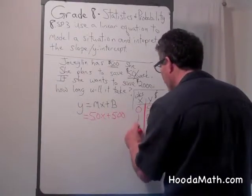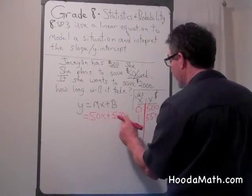If she worked for two weeks, 2 times 50 is $100, plus $500 is $600.